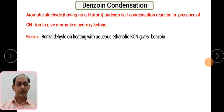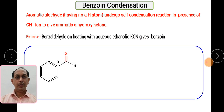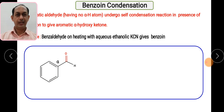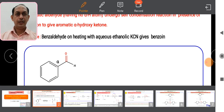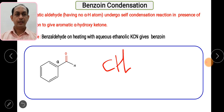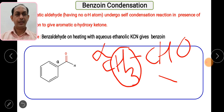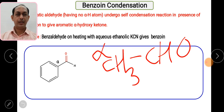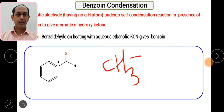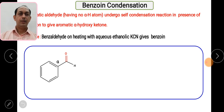Let us see which compound does not have the alpha hydrogen atom. Benzaldehyde — as you can clearly see, at this particular alpha carbon there is no hydrogen or proton present. So in benzaldehyde there is no alpha hydrogen at the alpha position. But if you see a compound like CH₃CHO, this is the alpha carbon and those three protons are alpha hydrogen atoms. This reaction will not be given by compounds which contain alpha hydrogen atoms, so you need to remember which compounds do not contain alpha hydrogen.